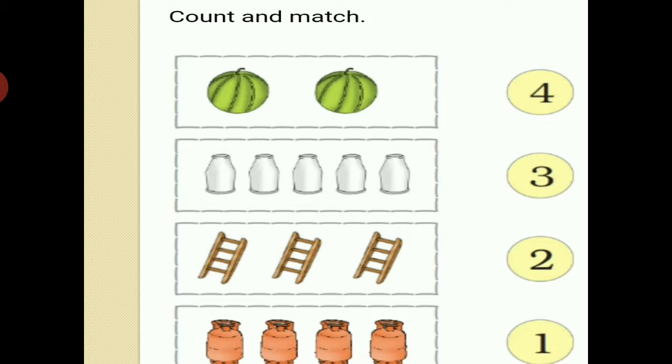Now bottles are 5 but here number is given 1. So, make it 5. Here nothing is 1. All are more than 1. So, 1 is not correct number. You make it 5.